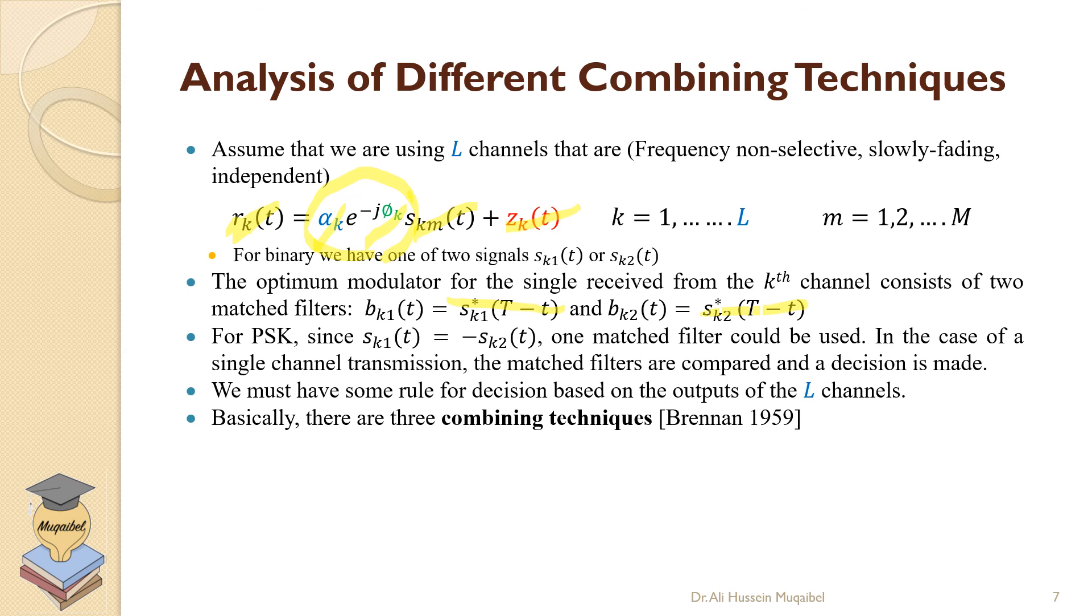We have to have some rule for decision based on the output of the different L channels. There was some work by Brennan in 1959 about how do we combine these different channels. So we speak about selective diversity, equal gain diversity, and maximum ratio combining diversity.